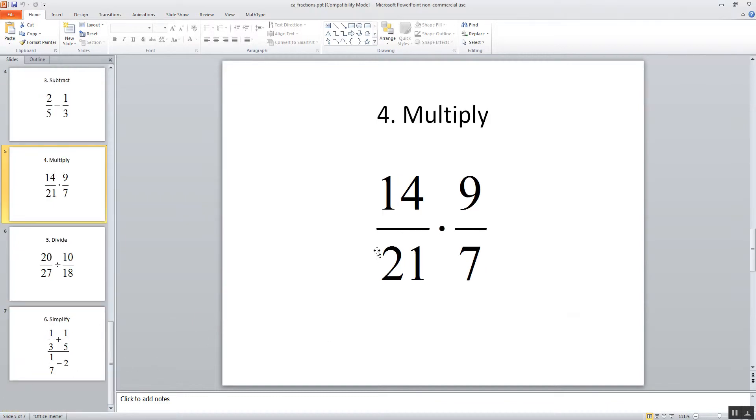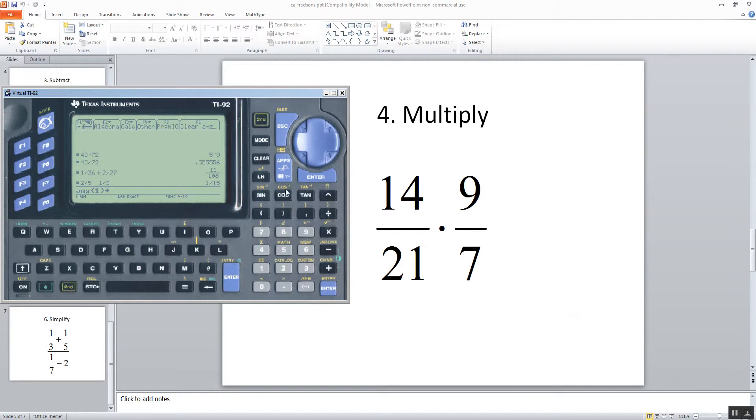Let's take a look at this one. So I'm going to press 14 divided by 21 times 9 divided by 7 and then push enter. And it's kind of bizarre looking how it looks there. But you see we get 6 7ths.